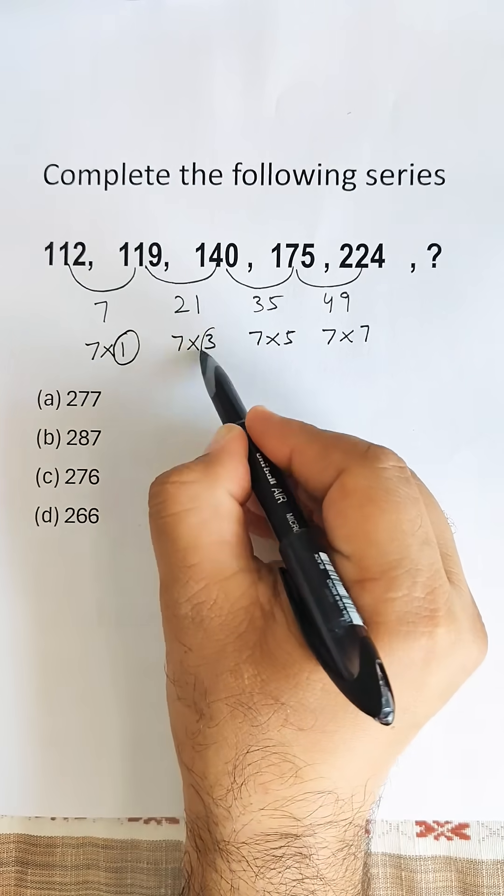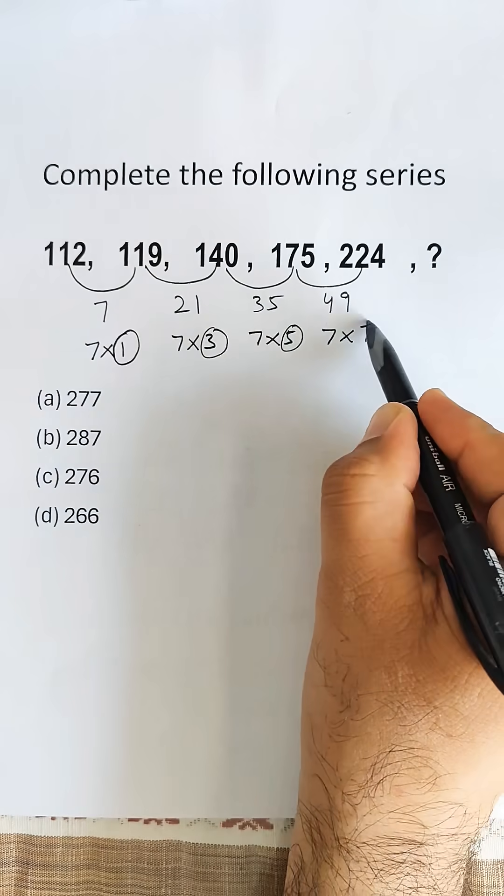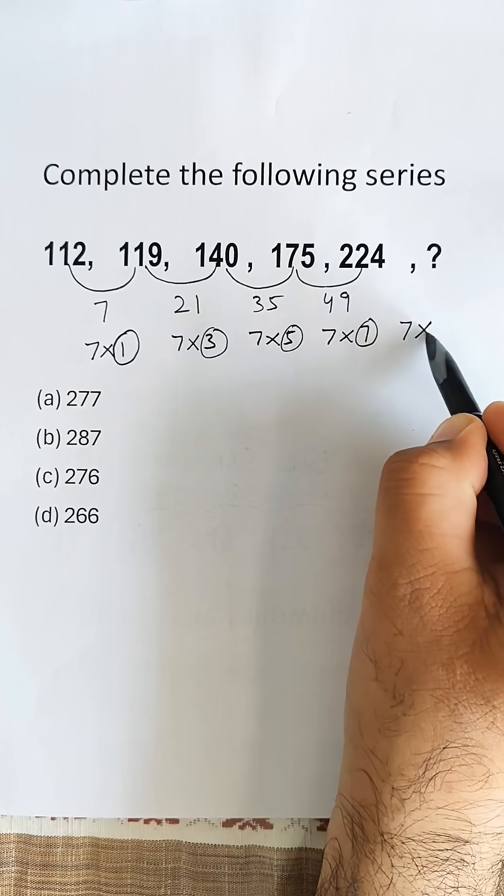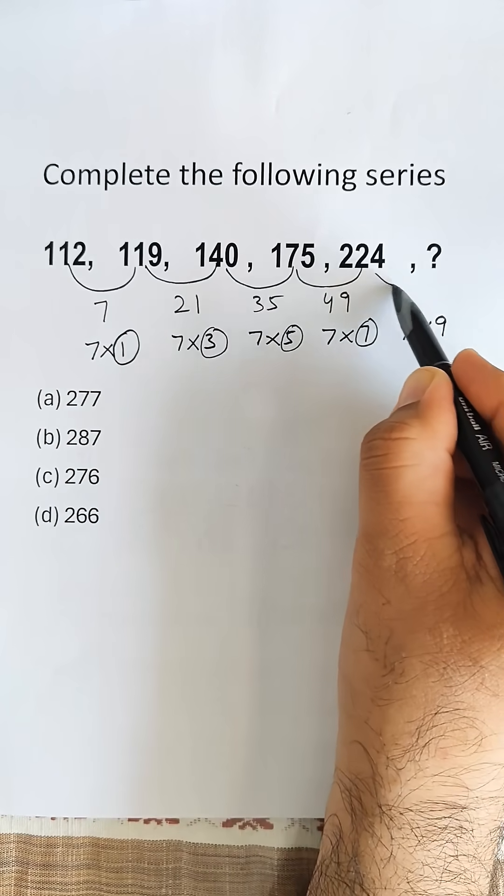The multipliers are 1, 3, 5, 7, so the next difference will be 7 times 9, which is 63.